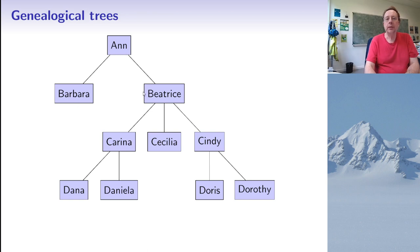So Anne had two daughters, Barbara and Beatrice. Barbara didn't have any daughters, but Beatrice had three of them, Carina, Cecilia and Cindy, two of which again had two daughters. Now the Galton-Watson model assumes that there's a certain probability distribution of offspring for each individual, which is always the same, but all these different numbers of offspring are independent of each other.